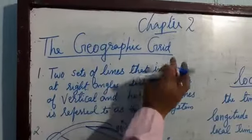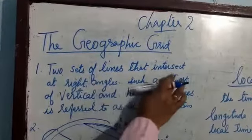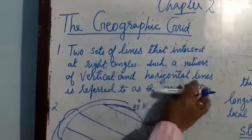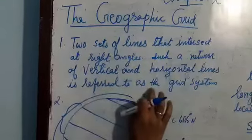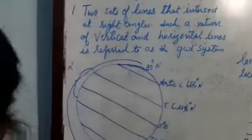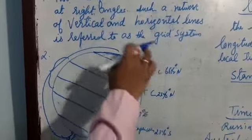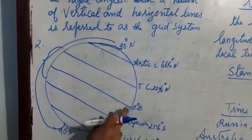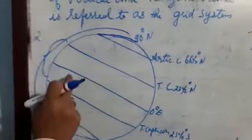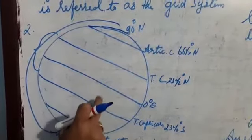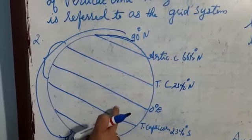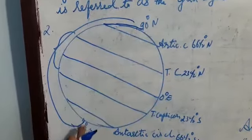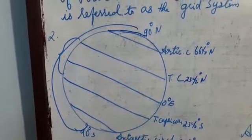The first topic is Geographical Grid — two sets of lines that intersect at right angles. Such a network of verticals and horizontal lines is referred to as a grid system. Every globe has two sets of circles: one set runs from east to west, all parallel to the equator, and these are called parallels or latitudes. Another set runs from north to south — these are meridians or longitudes.